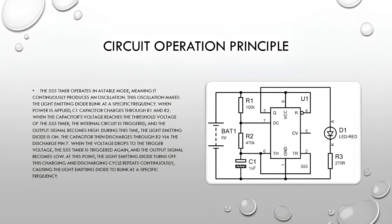During this time, the light-emitting diode is on. The capacitor then discharges through R2 via the discharge pin 7. When the voltage drops to the trigger voltage, the 555 timer is triggered again, and the output signal becomes low. At this point, the light-emitting diode turns off.